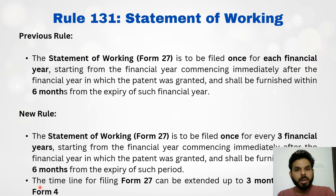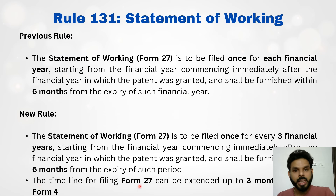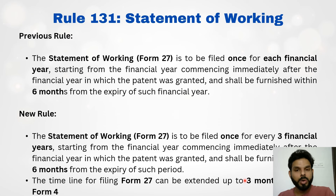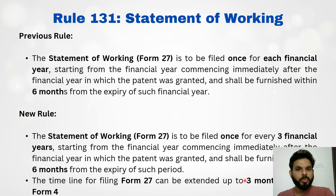The second amendment in Rule 131 is that the timeline for filing Form 27 can be extended by up to three months by filing Form 4. There was no provision earlier to request this extension, but now it has been brought into place. One can request an extension of the timeline to submit Form 27 by filing Form 4, that is, a request for extension of time.